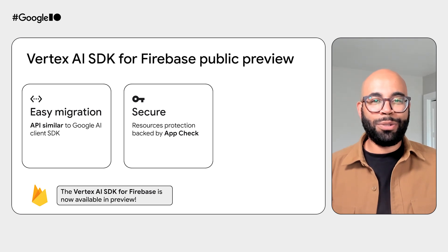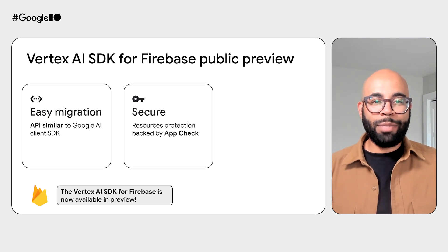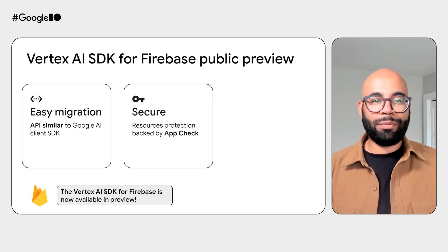Let's now talk about the Vertex AI SDK for Firebase. Firebase is a service used and trusted by millions of developers around the world. It provides a broad range of services from application crash monitoring to push notifications. The API is very similar to the Google AI client SDK we just discussed, so the migration should be easy. And thanks to AppCheck, Firebase provides high-level credential protection.